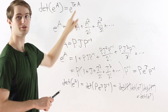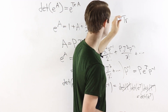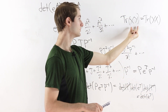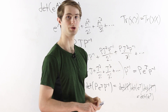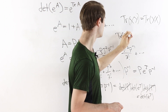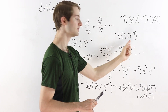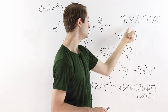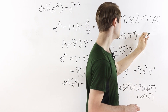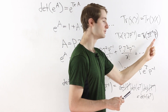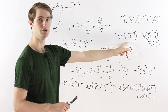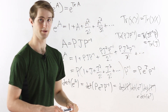We also need the trace of A. A key property of the trace is that the trace of XY equals the trace of YX — it doesn't matter what order we multiply two matrices before taking the trace. So for the trace of pJp inverse, we can reorder: the trace of Jp inverse p equals the trace of J, since p inverse p cancels. Therefore, the trace of A equals the trace of J.